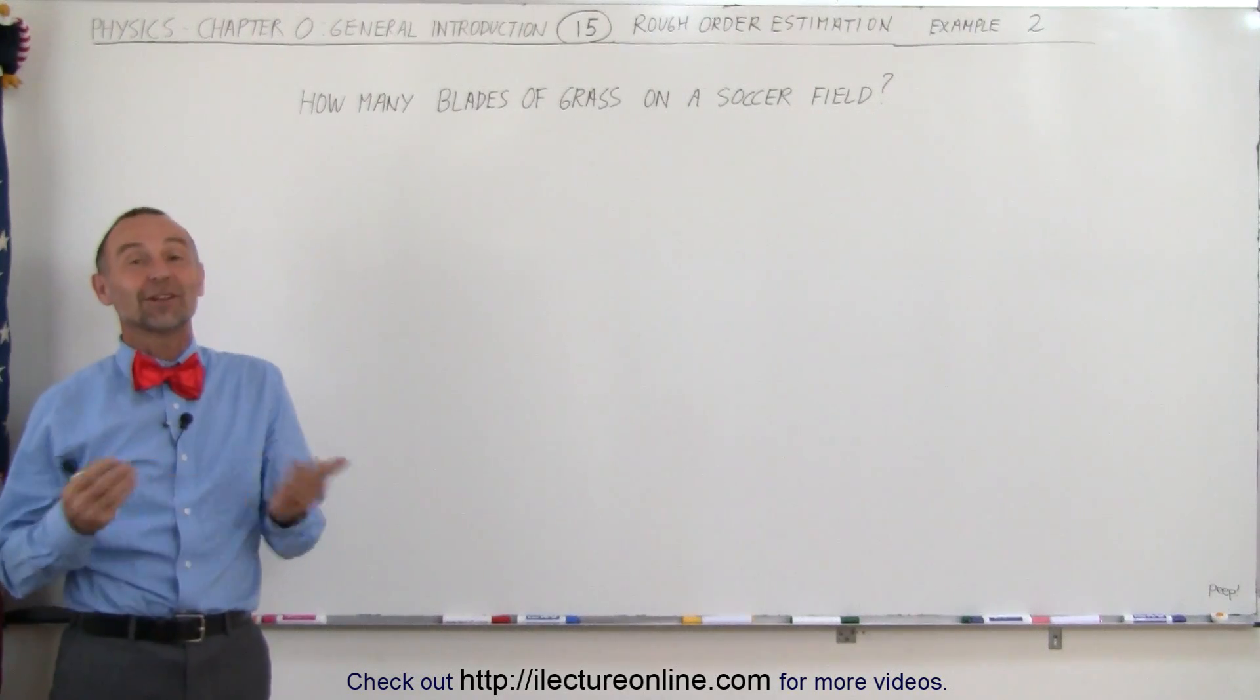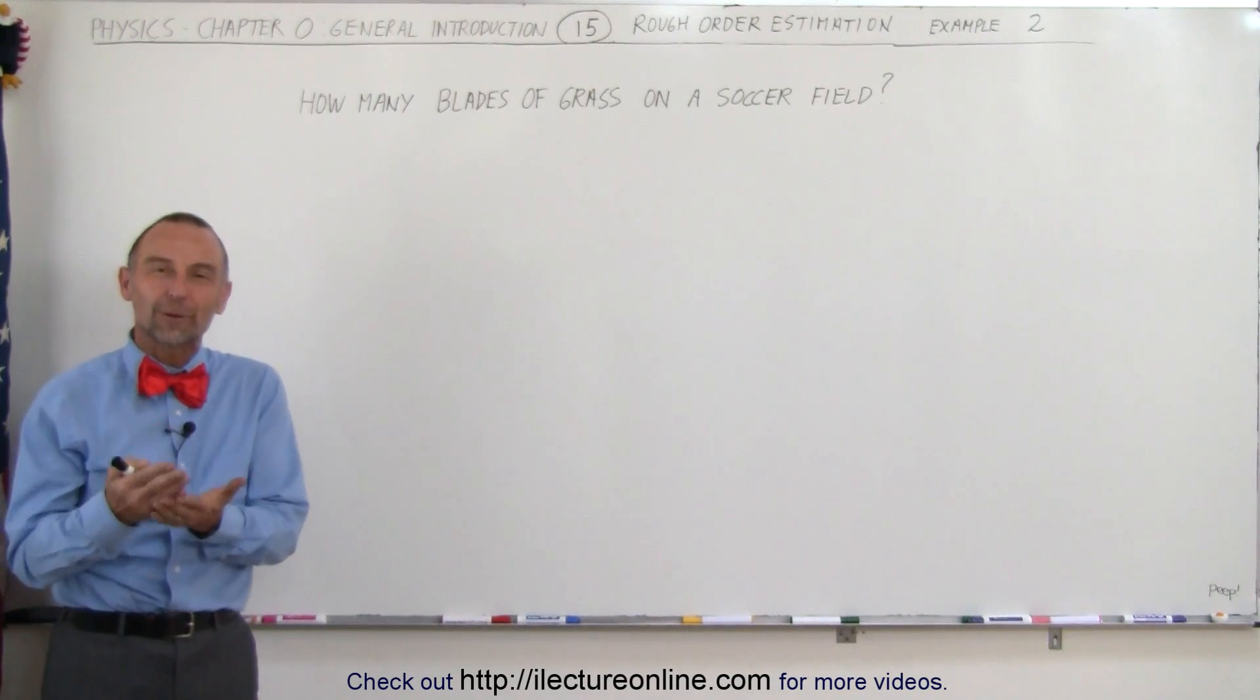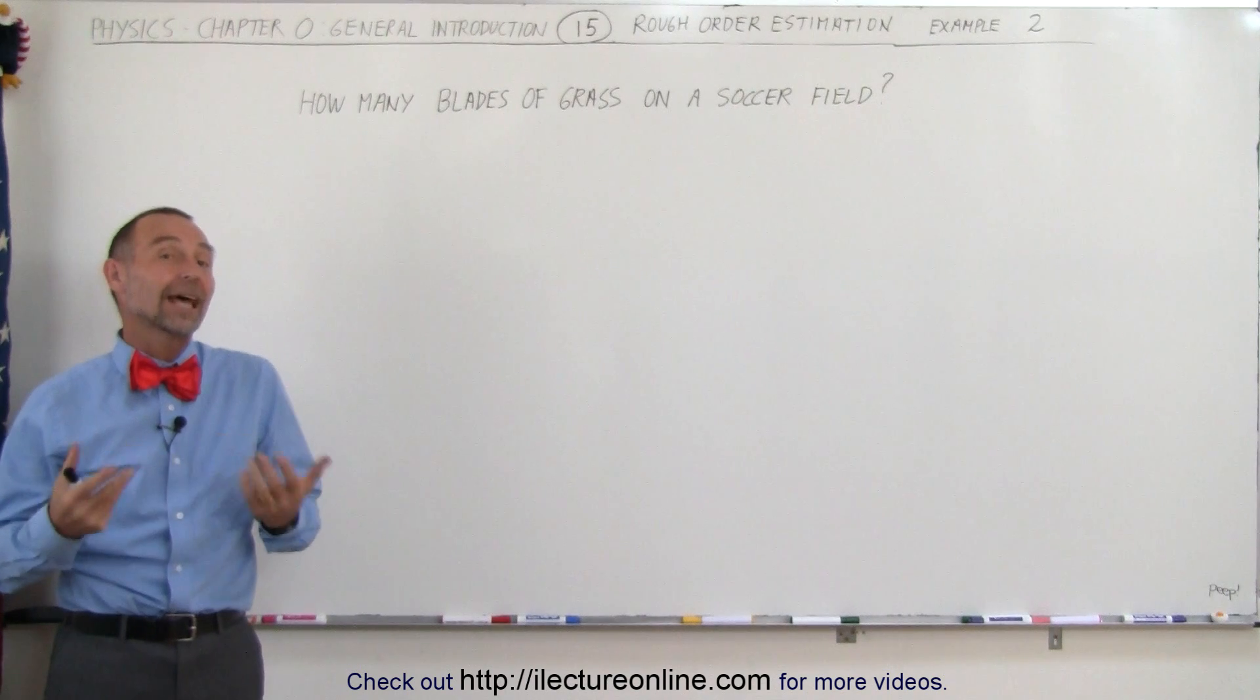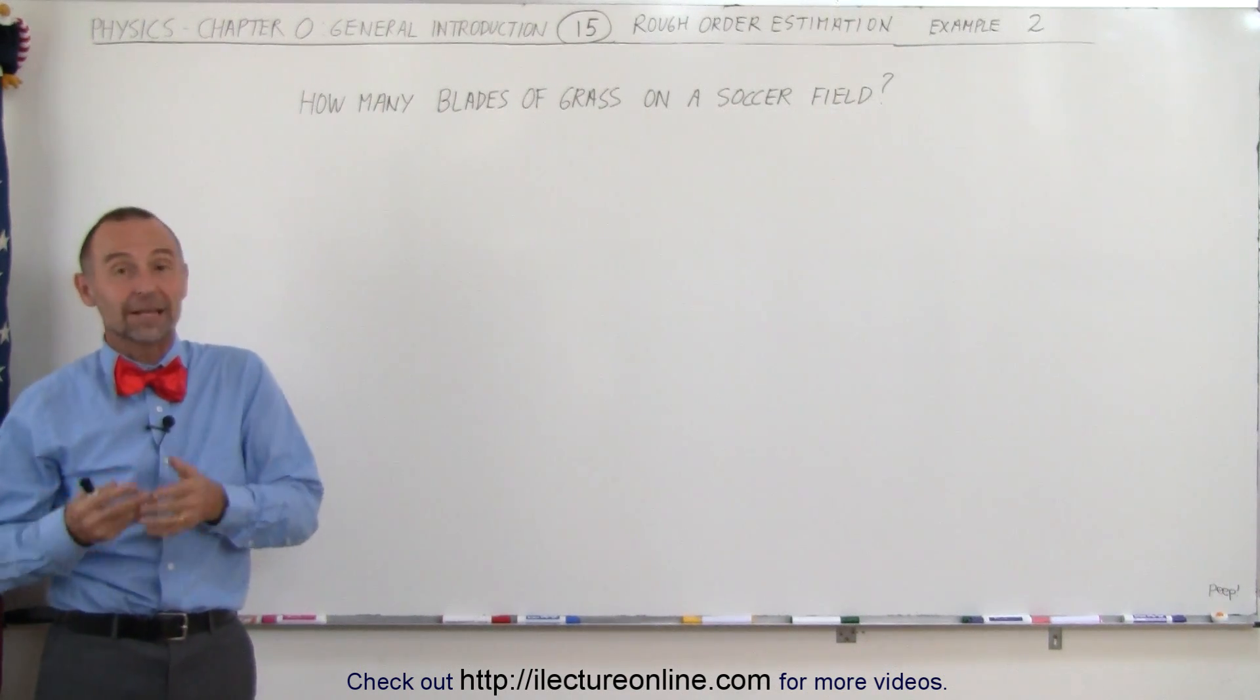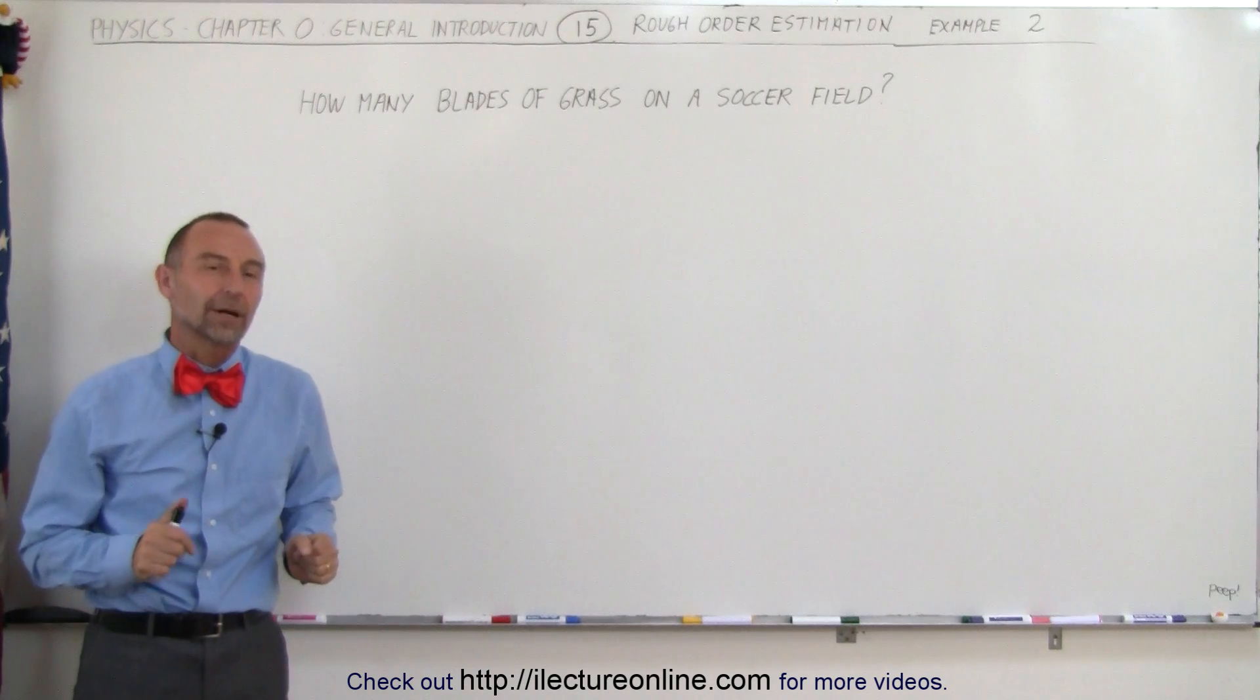Welcome to Electronline. Here's another example of how we use rough order estimation very quickly to come up with an answer that is reasonable. It may not be accurate, but at least reasonable. It's in the ballpark.